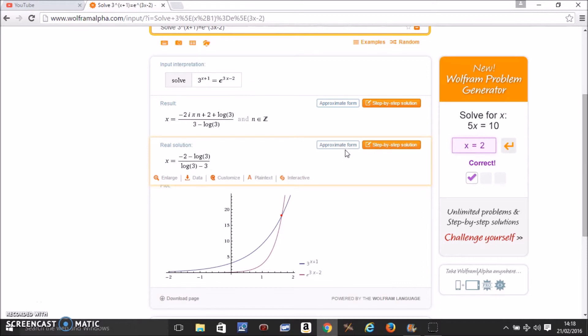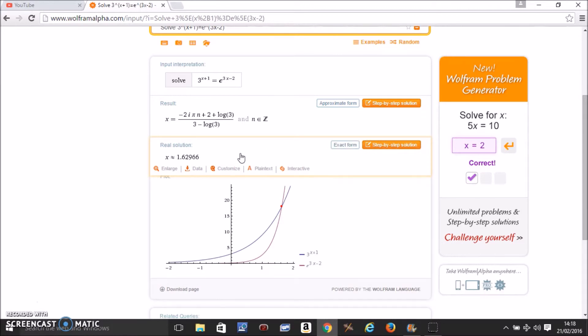If you want, you can put this in decimal form by pressing the approximate form. If you do that, the decimal form will show up.